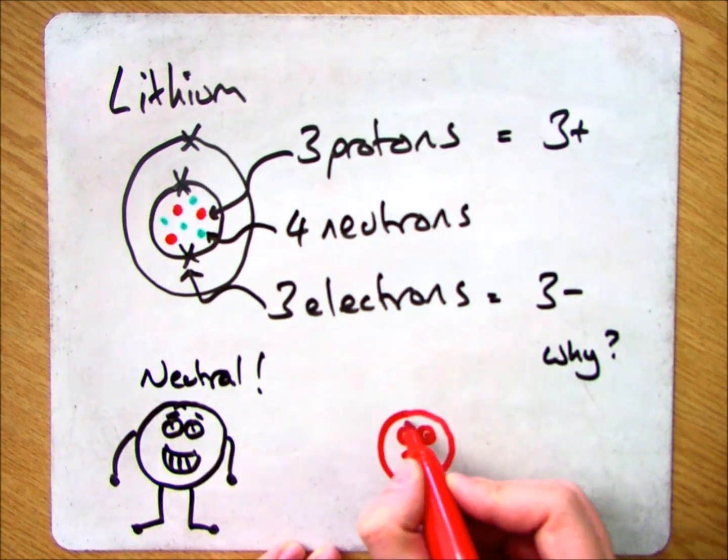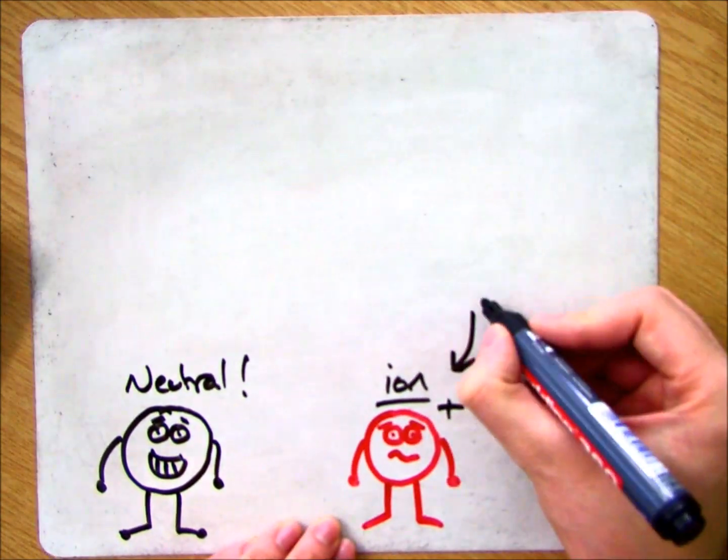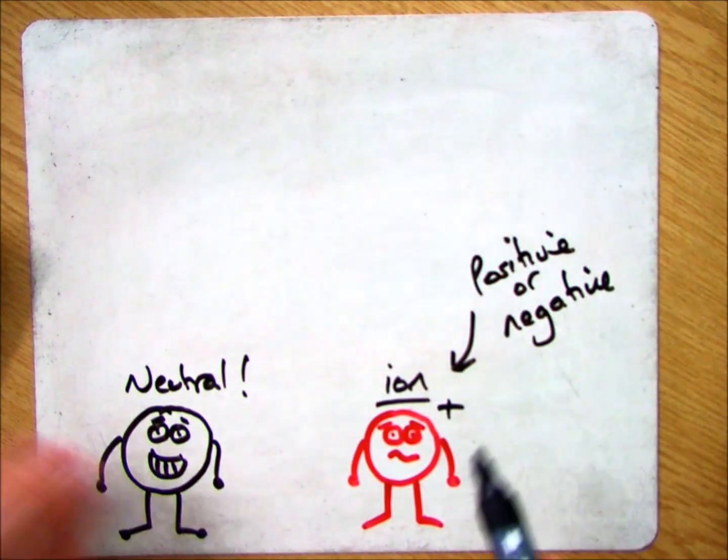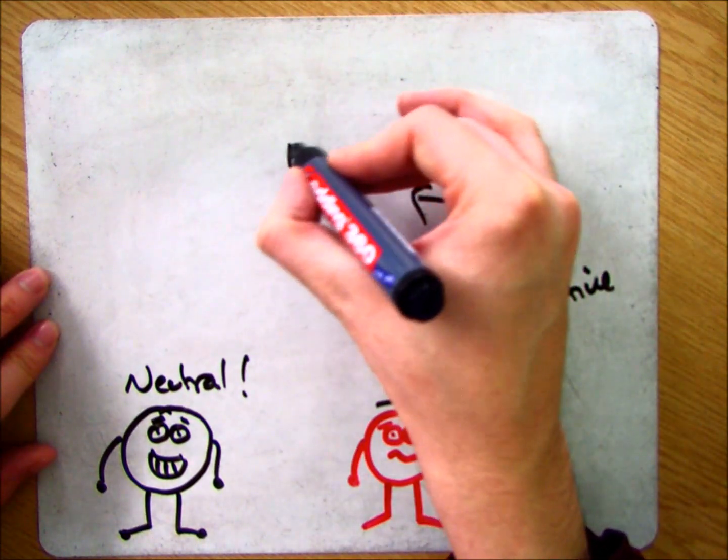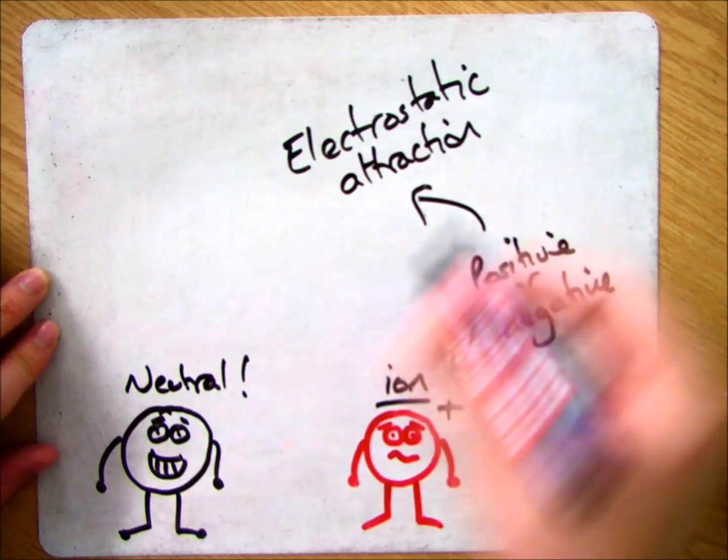Anything that is not neutral is something that is known as an ion, and that is something that is positively or negatively charged. If it's positive or negative, it is electrostatically charged, and that means the ions are attracted to each other.